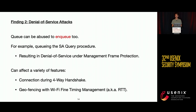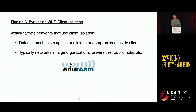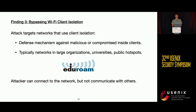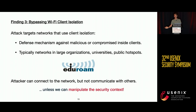In our final set of findings, we found that an attacker can bypass client isolation. This is a defense mechanism introduced for networks such as home networks or public hotspots where you don't necessarily trust clients, and you want to prevent them from communicating with each other. As an attacker, we assume you can connect to the network but cannot communicate with other clients — unless we find a way to manipulate the security context.